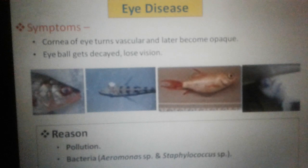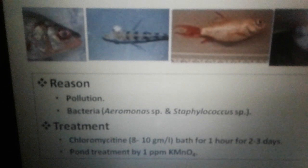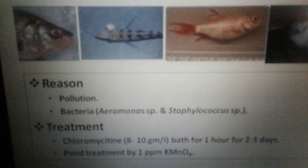Next is eye disease. In this case, the cornea of the eyes becomes opaque, layers can separate, and the eyeball may decay or lose vision. Pollution and bacteria such as Aeromonas and Staphylococcus are the main reasons. Treatment includes chloromycetin and pond treatment with K-MnO4.